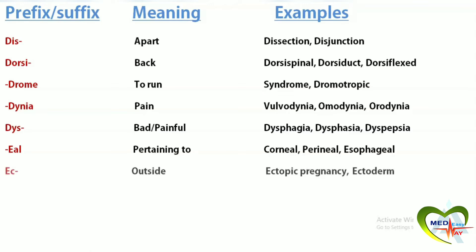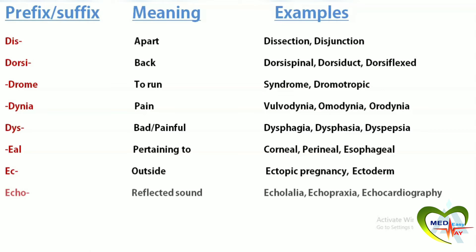Ec means outside. Ectopic pregnancy is a pregnancy in which the fetus develops outside the uterus. Ectoderm is the outermost layer of cells. Echo means reflected sound. Echolalia is the repeated repetition of speech. Echopraxia is repetition of movement. Echocardiography uses ultrasound waves to investigate the action of the heart.